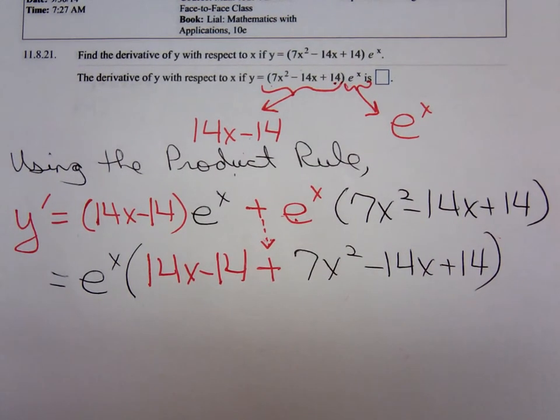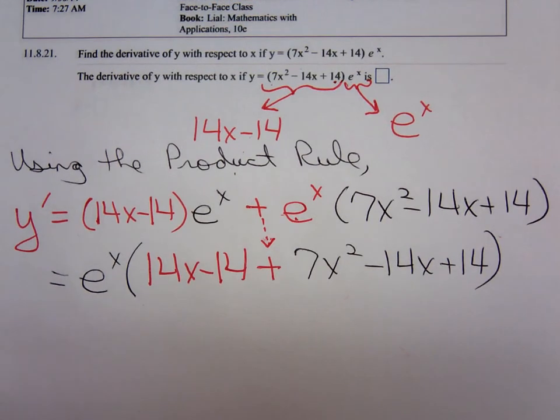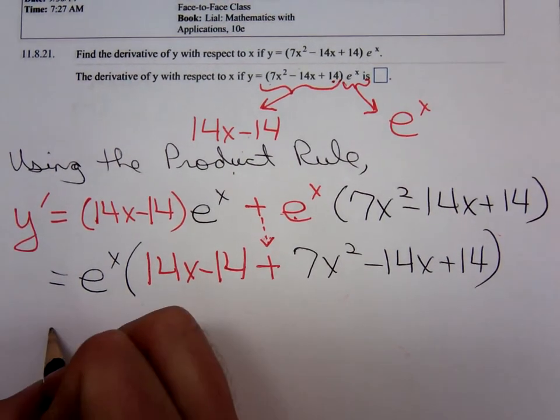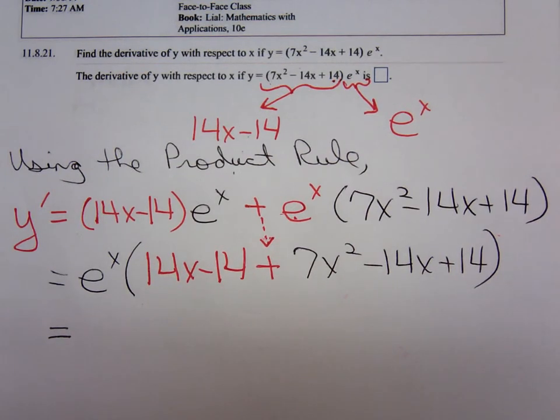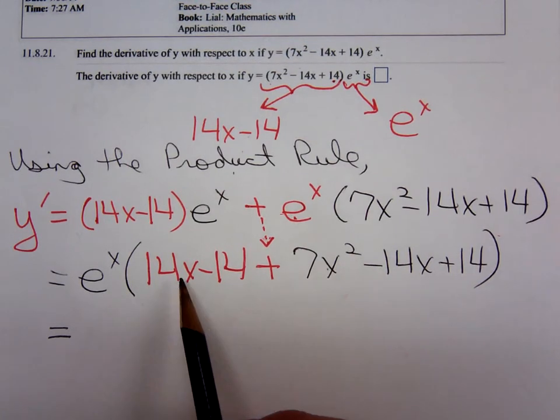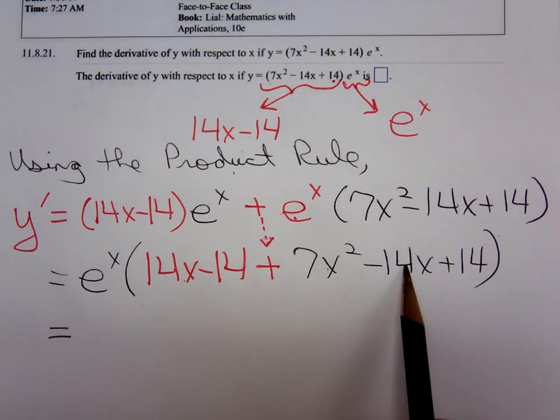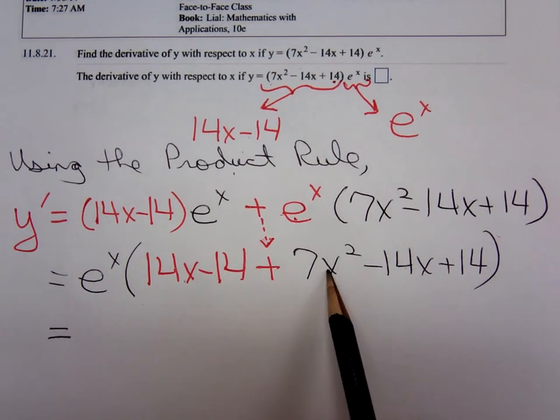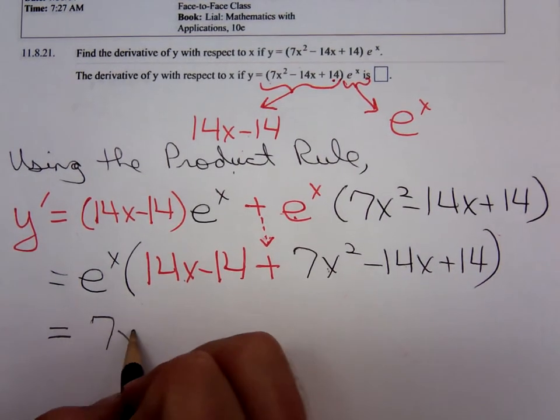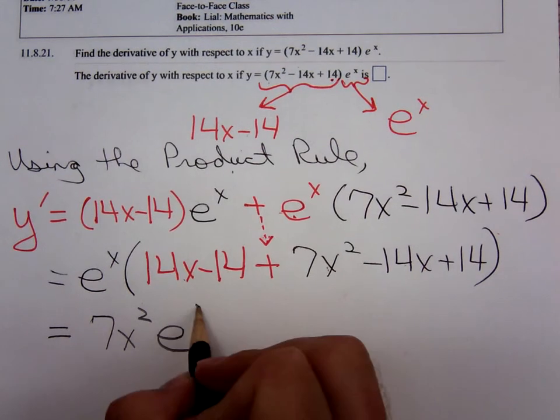And this is reducing very nicely. I'm going to simplify inside the parentheses. What's the only thing we're going to have left inside those parentheses? Just the 7x squared. 14x minus 14x will go to 0. Negative 14 plus 14 will go to 0. So all we have is 7x squared times e to the x.